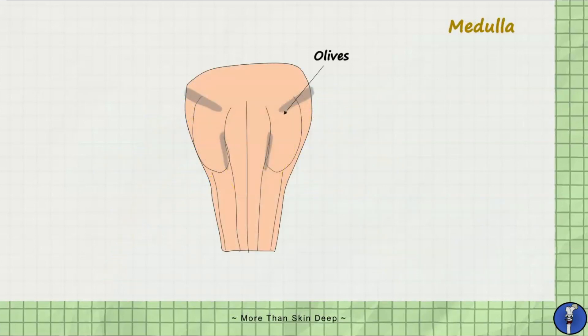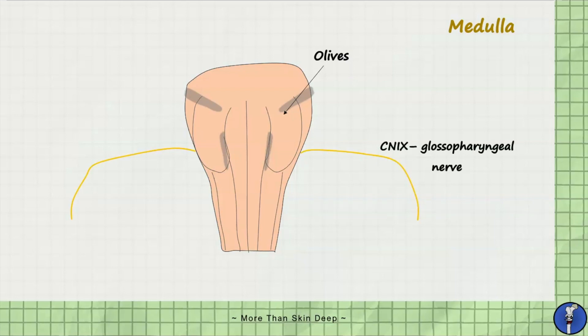The last division of the brainstem is the medulla oblongata, which gives rise to the last four cranial nerves. Observing the medulla from the anterior view, a pair of swellings called the olives are located on either side of the pyramids. The ninth cranial nerve — the glossopharyngeal nerve — comes off the upper aspect of the medulla behind the olives. The tenth cranial nerve — the vagus nerve — also originates posterior to the olives, in a groove between the olives and a structure called the inferior cerebellar peduncles.